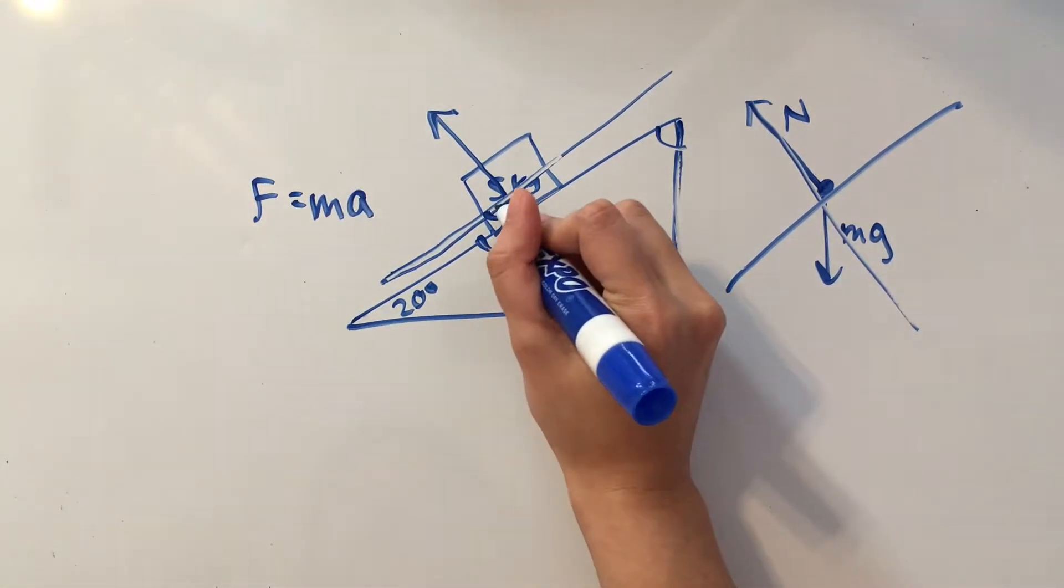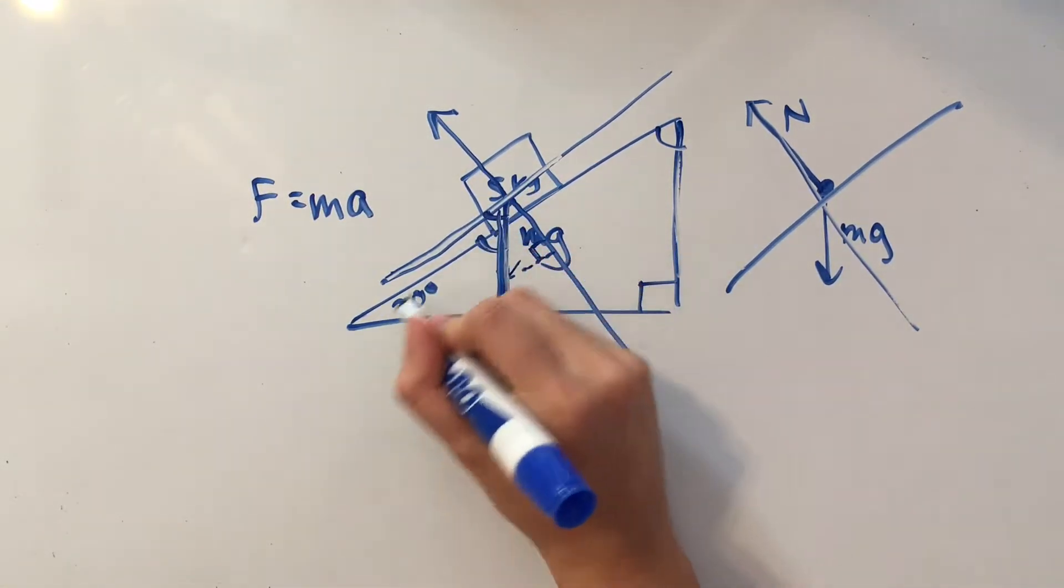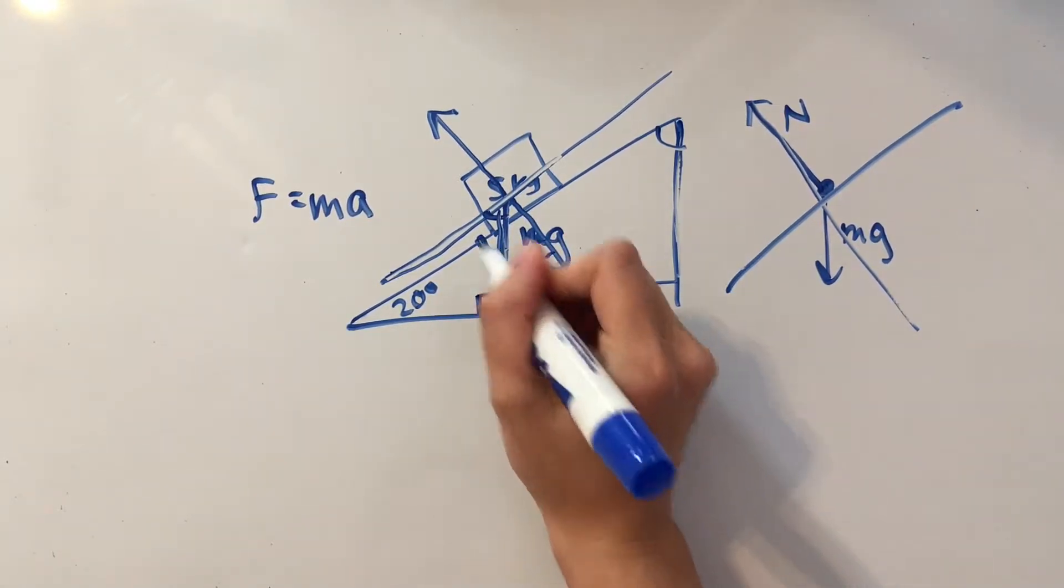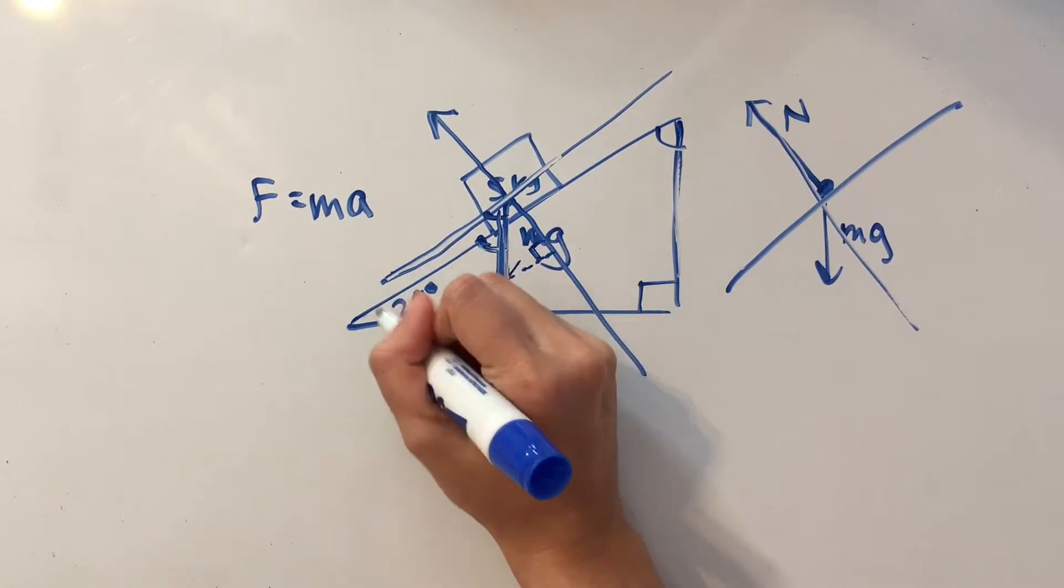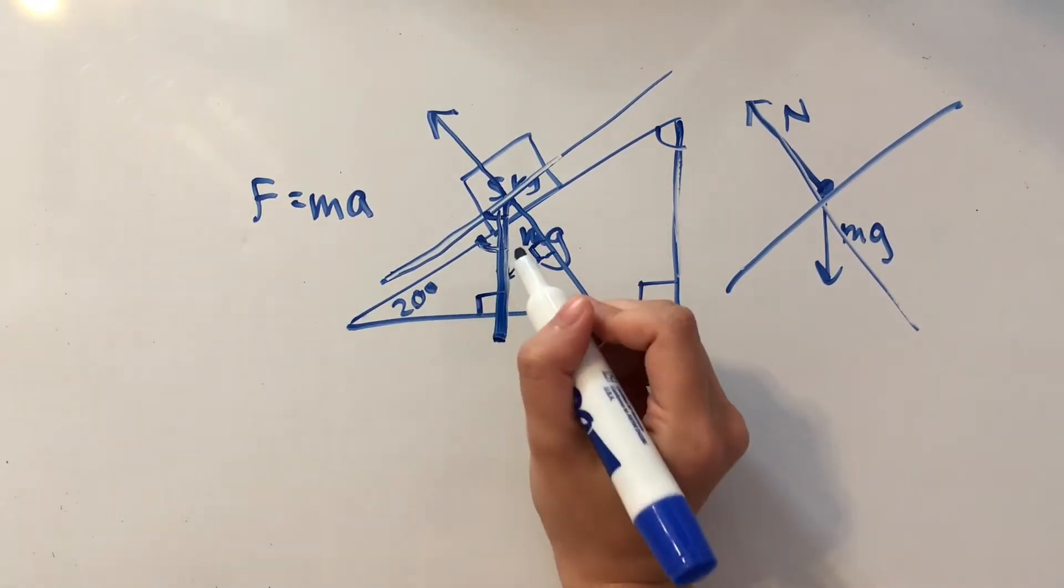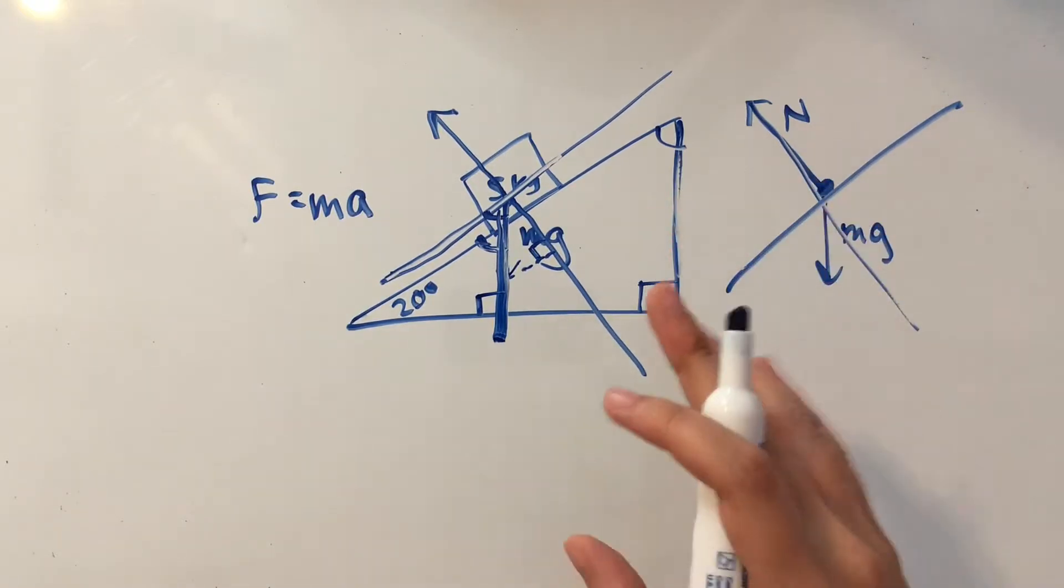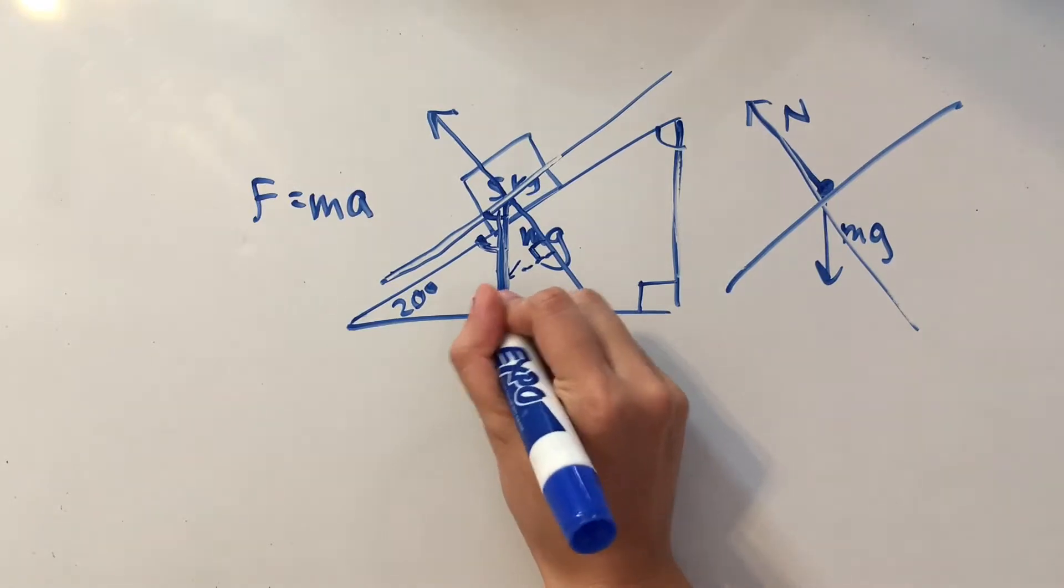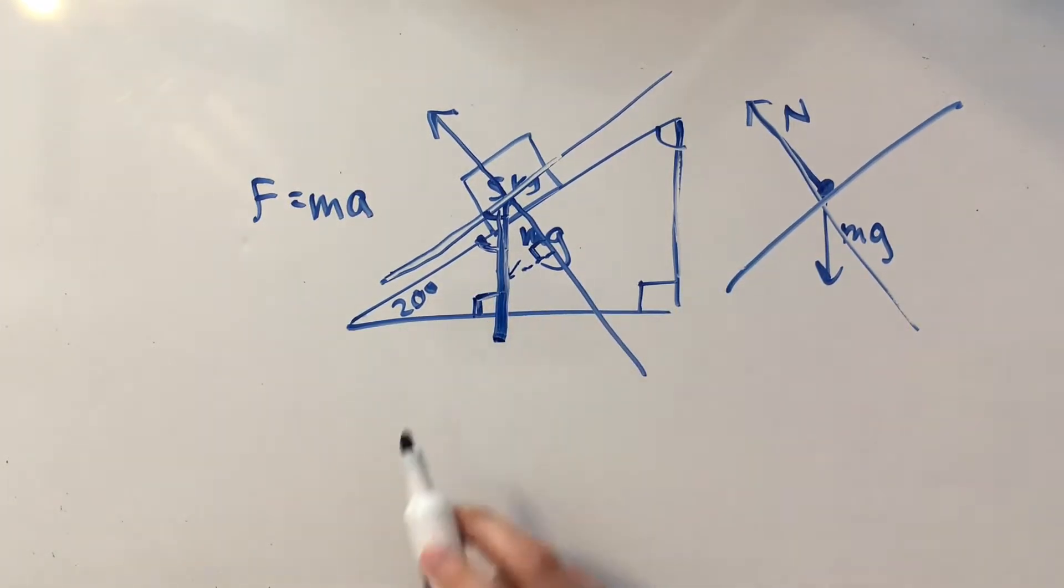We can also see that another triangle forms here. So this is going to be an angle of 90 degrees. We have this angle and then 20 degrees. So we know that these two angles have to add up to 90 degrees because all triangles have angles that add up to 180 degrees. And we also know that this is already 90 degrees.